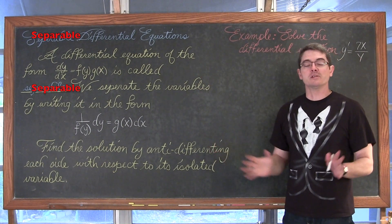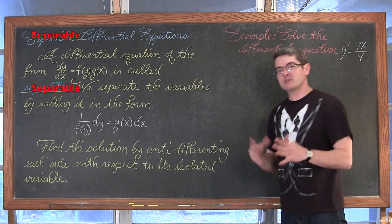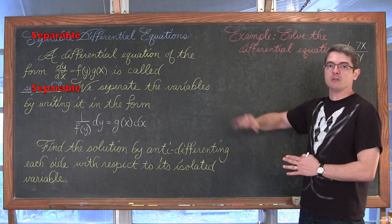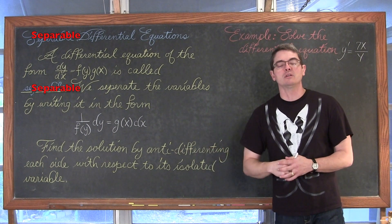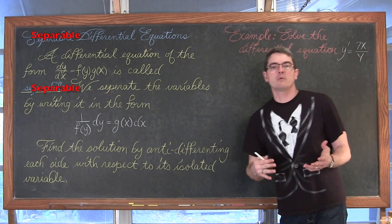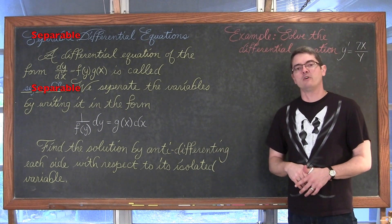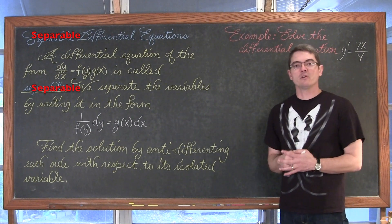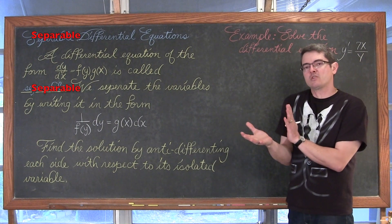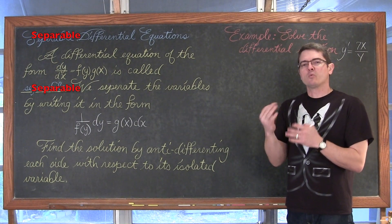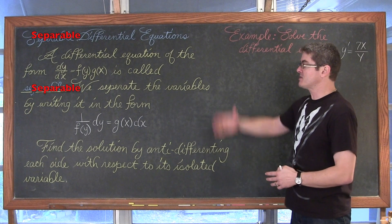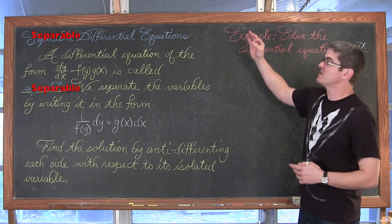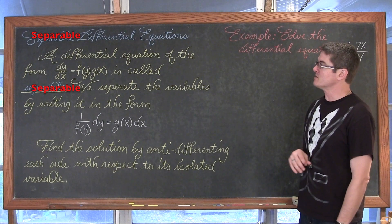There is a whole semester course on this in college, and it can be quite complex, but we are looking at just this one type. We'll use it in the next section of my calculus course where we solve differential equations involving exponential growth and decay, or direct and inverse variation. With that exponential growth and decay model there is a shortcut rule, but to see where that comes from we have to understand how to solve these separable differential equations.